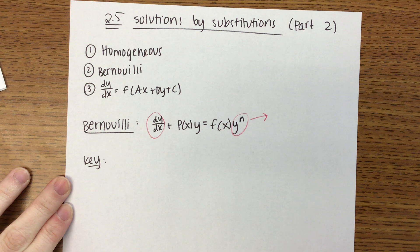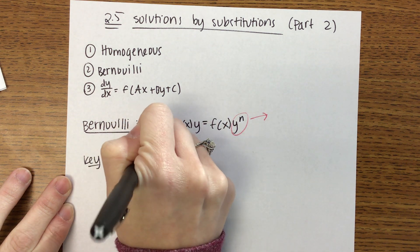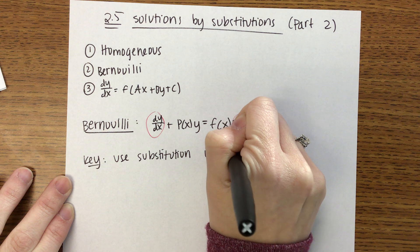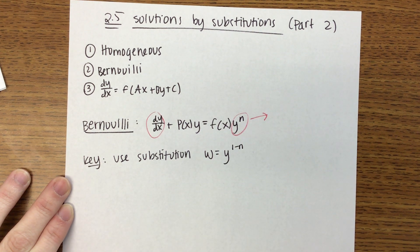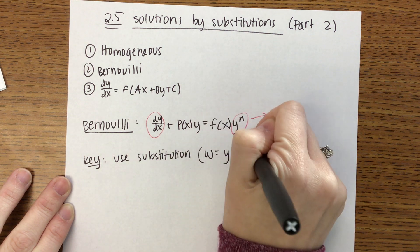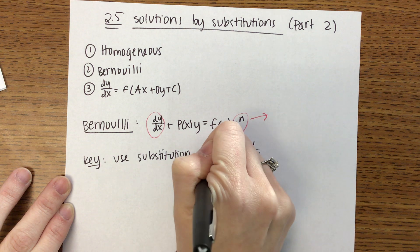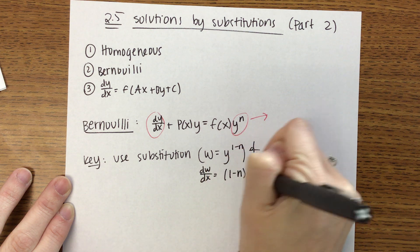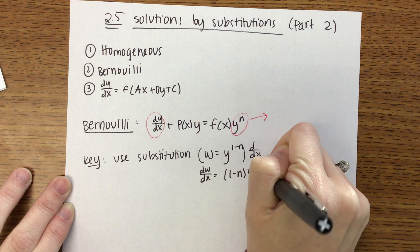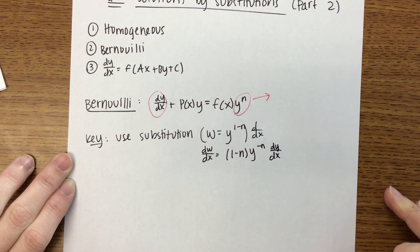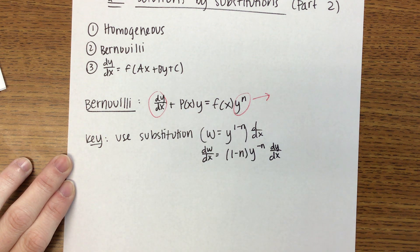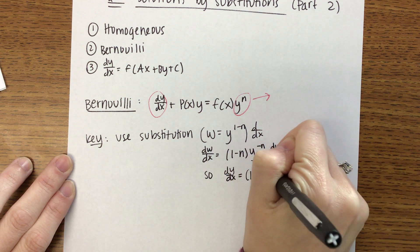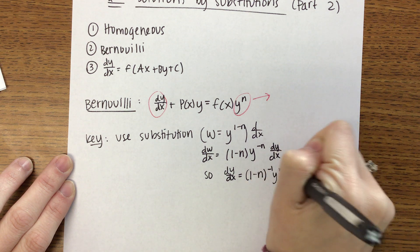Here is the key to solving Bernoulli equations. You are going to use the following substitution: w equals y to the power (1 minus n). Then taking the derivative with respect to x, on the left side you get dw/dx, and on the right side you get (1 minus n) times y to the negative n times dy/dx. Solving for dy/dx gives us dy/dx equals (1 minus n) to the negative one times y to the n times dw/dx.